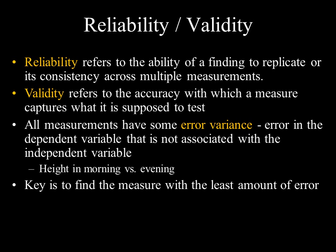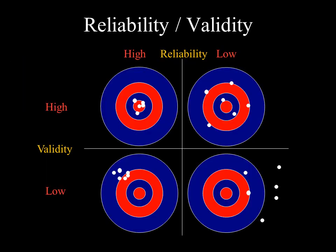That's an example of error variance — a small one. Some measurements have large error variance. The key is to find a measure with the least amount of error. A good way to conceptualize this is the game of darts. Imagine you're at the end of a game trying to hit the bullseye. What you really want is both high reliability and high validity, represented by the dartboard in the top left — you're aiming for the bullseye and hitting it.